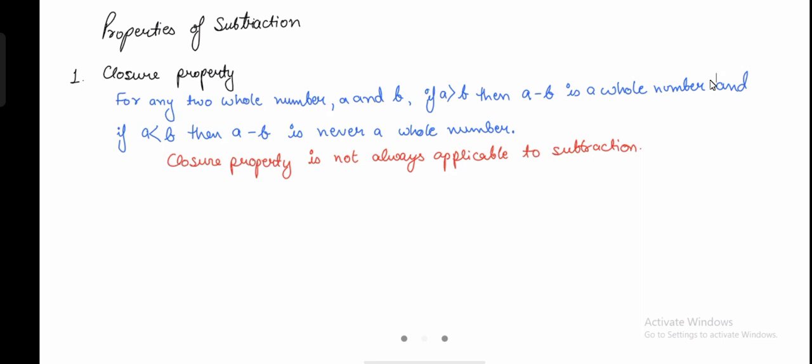So the first one is the closure property. Let's understand the definition. It says that for any two whole numbers, let's say A and B, where A and B are any two whole numbers.